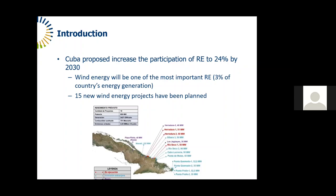The current climate crisis calls for an early transition to low-carbon energy sources, and renewable energies are a real option, which is why many countries are increasing the participation of this type of technology in electricity generation. Cuba was not left behind, recently proposing to increase the participation of renewable energies by 2030, with wind energy being one of those planned to have more participation. Cuba has already started planning and implementing wind projects in the country, so having information on wind conditions will allow identifying and validating potential wind generation sites.